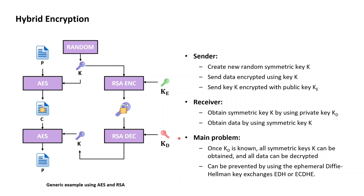This problem can be solved by using ephemeral Diffie-Hellman key exchanges, which make sure that the symmetric key K is never on the wire between Alice and Bob, neither in plain nor encrypted. How this really works is out of scope for this course, but anyone interested to know more is kindly referred to other courses dedicated to the subject of cryptography.